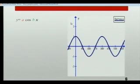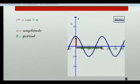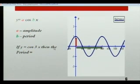I've chosen the example of cosine this time just to show you that the same applies. a affects my amplitude and b affects my period. So if I have y equals cos 3x then I know I should have three complete cycles over 360 degrees.